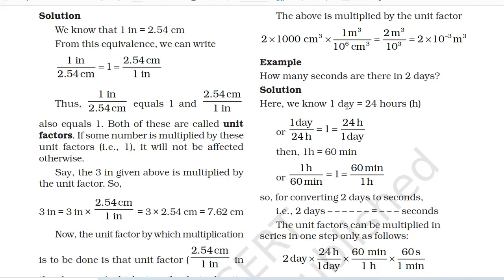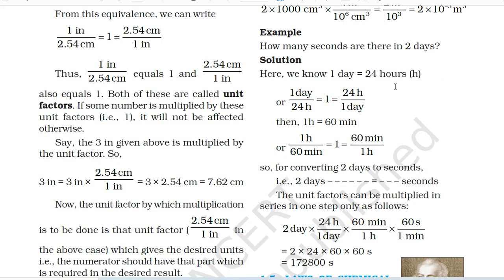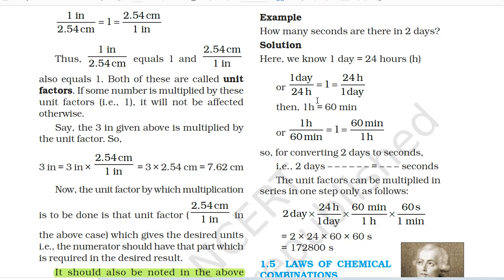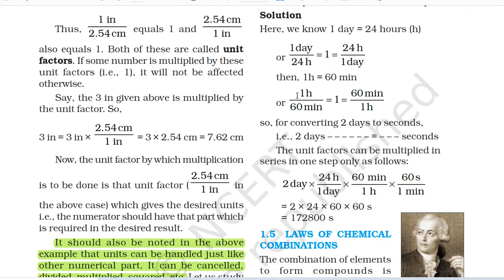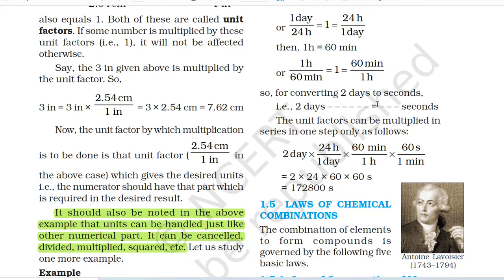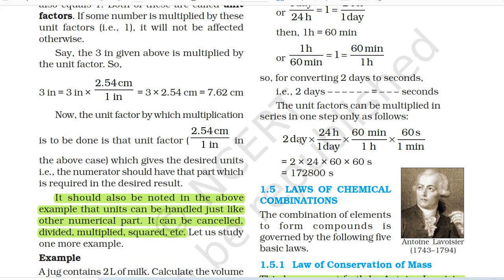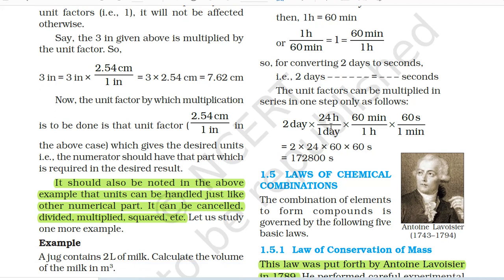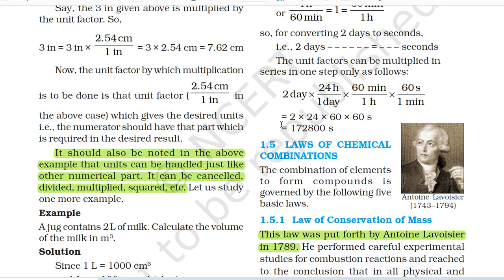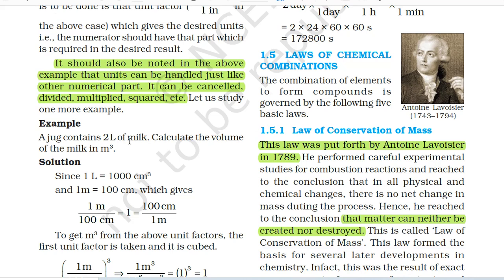Example: how many seconds are there in 2 days? Solution: 1 day = 24 hours, 1 hour = 60 minutes, 1 minute = 60 seconds. For converting 2 days to seconds, the unit factors can be multiplied in series in one step: 2 days × (24 hours / 1 day) × (60 minutes / 1 hour) × (60 seconds / 1 minute) = 2 × 24 × 60 × 60 seconds = 172,800 seconds.